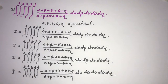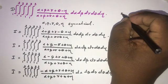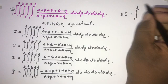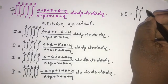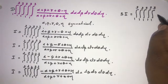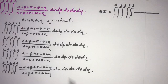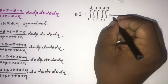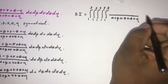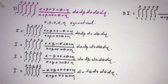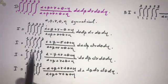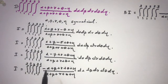So we have five equations including the original. Now, if we add these five equations, we get 5 times I equal to the integral from 1 to 3 (five times) with the same denominator (alpha plus beta plus gamma plus theta plus eta). In the numerator, taking alpha: we have alpha plus alpha plus alpha plus alpha minus alpha, giving 3 times alpha.